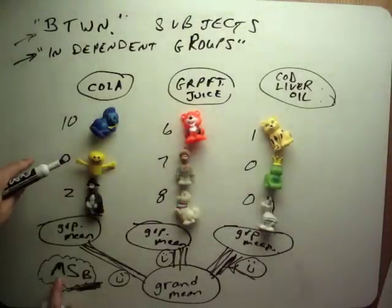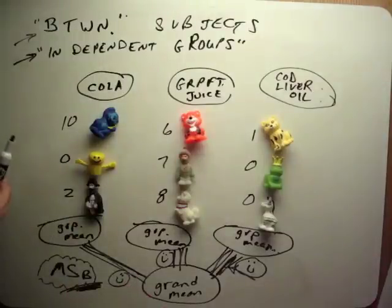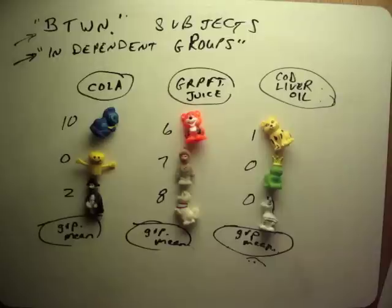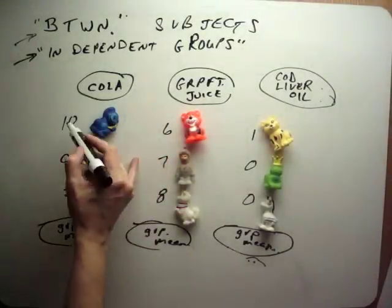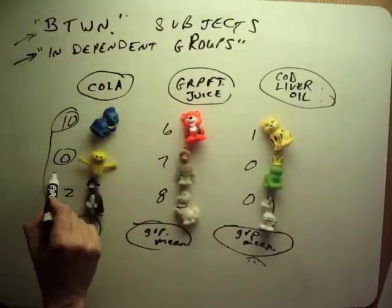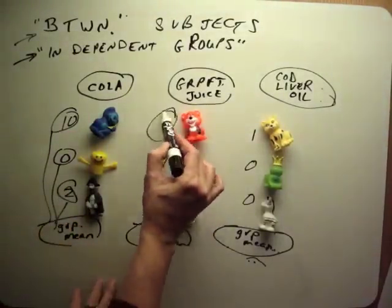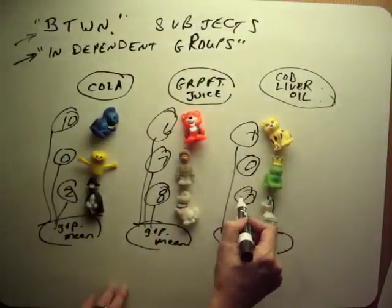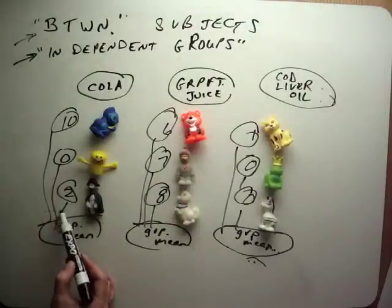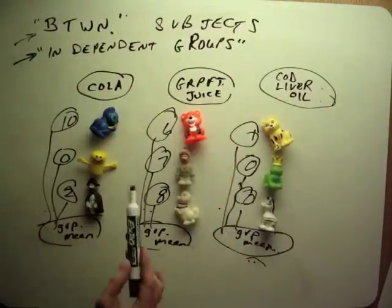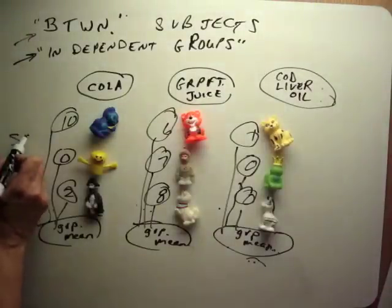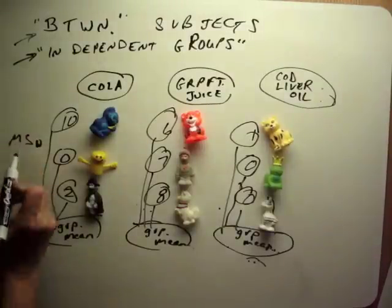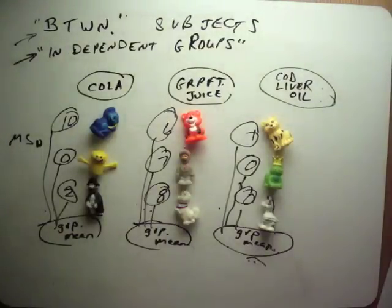Now, leaving between-group variability, we're going to talk about differences within groups. For each person you take their score minus the mean for their group — so the monkey's score of 10 minus the group mean, each person's score minus their group's mean. You get deviations within groups, square them to make squares, sum them up to make sum of squares within, then average them into mean squares within using degrees of freedom.